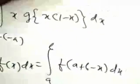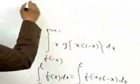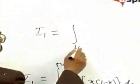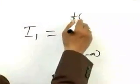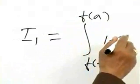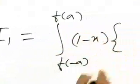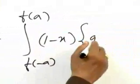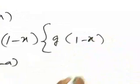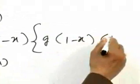Therefore, i1 will be equal to f of minus a, f of a, in this case 1 minus x, that is g of 1 minus x here, into 1